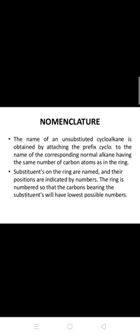Nomenclature of cycloalkanes: The name of an unsubstituted cycloalkane is obtained by attaching the prefix 'cyclo' to the name of the corresponding normal alkane having the same number of carbon atoms as the ring. Substituents on the ring and their positions are indicated by numbers, numbered so that the carbons bearing substituents have the lowest possible numbers.